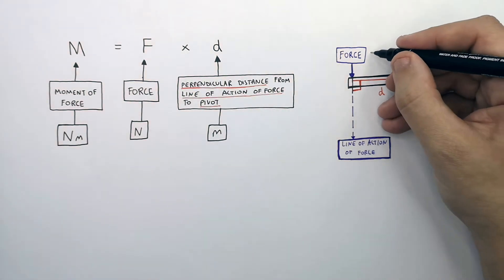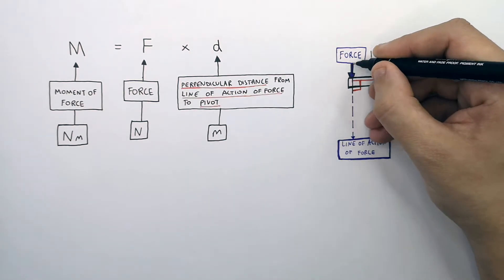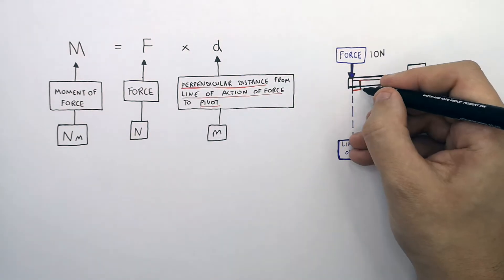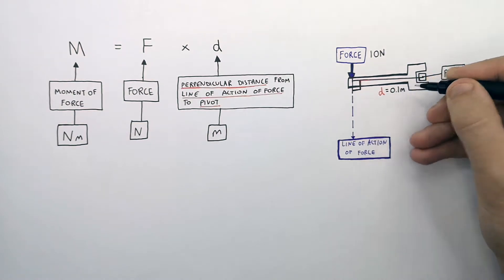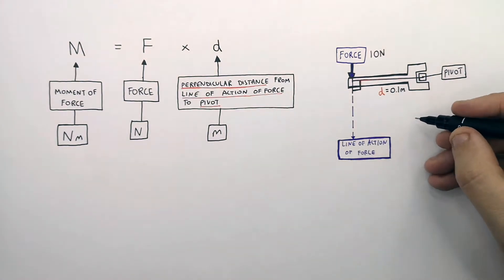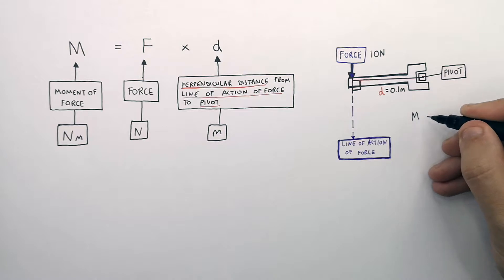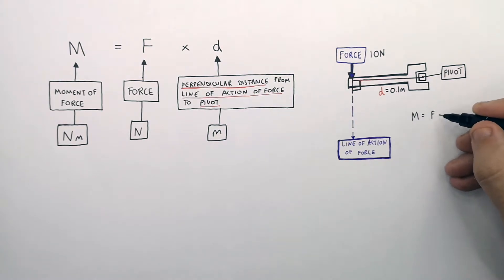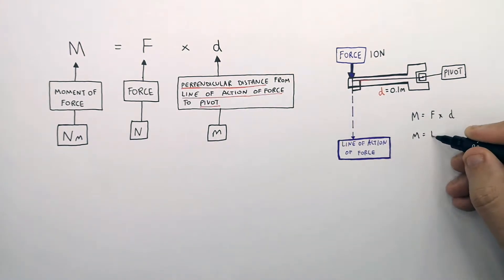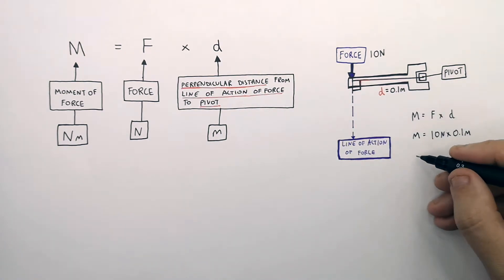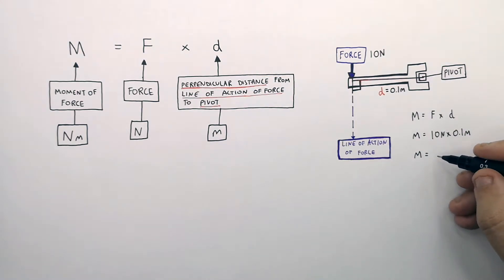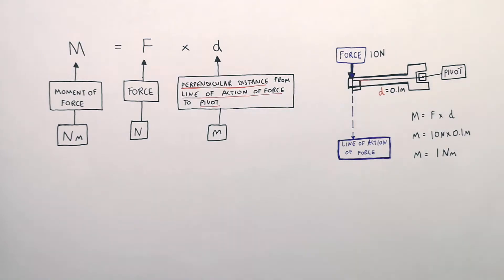So if the force is 10 Newtons and the perpendicular distance from the line of action of the force to the pivot is 0.1 meters, we can calculate the moment of the force. Recall M equals F times D. M equals 10 Newtons times 0.1 meters, which gives you the moment in an anti-clockwise direction of 1 Newton meter.